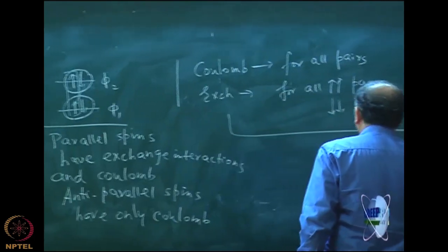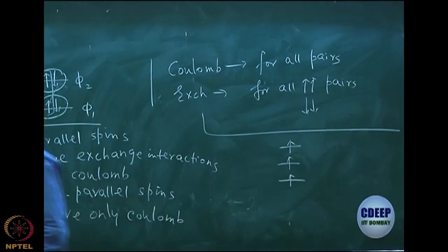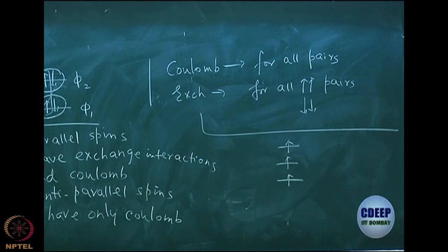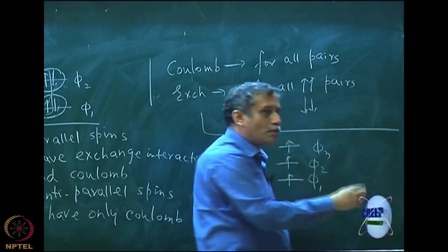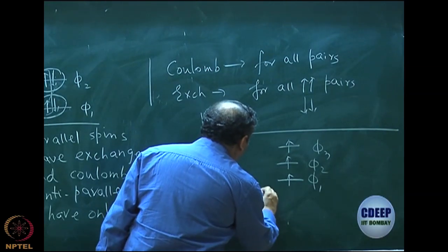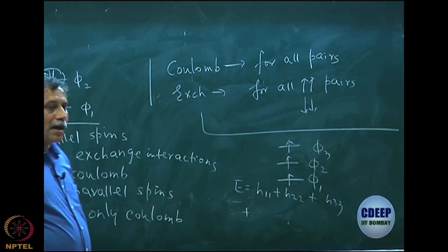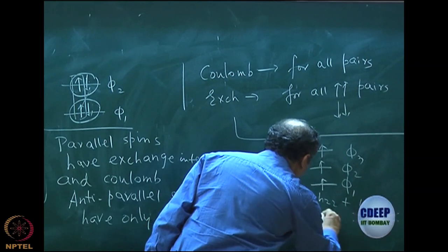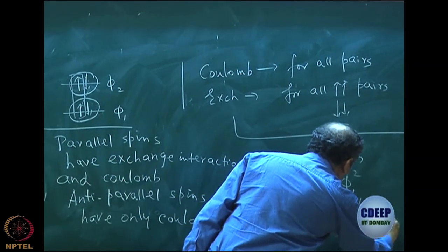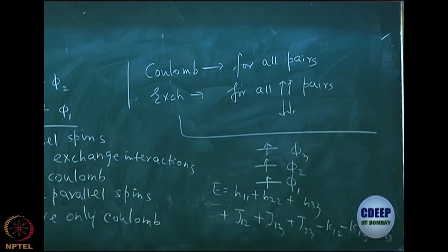Let us assume an open shell high-spin state: phi_1, phi_2, phi_3, each with spin up — a quartet state. The energy will be H_11 plus H_22 plus H_33. Since all pairs are now parallel pairs, everything remains: J_12, J_13, J_23 minus K_12 minus K_13 minus K_23. All pairs are parallel pairs, so every pair contributes both Coulomb and exchange.